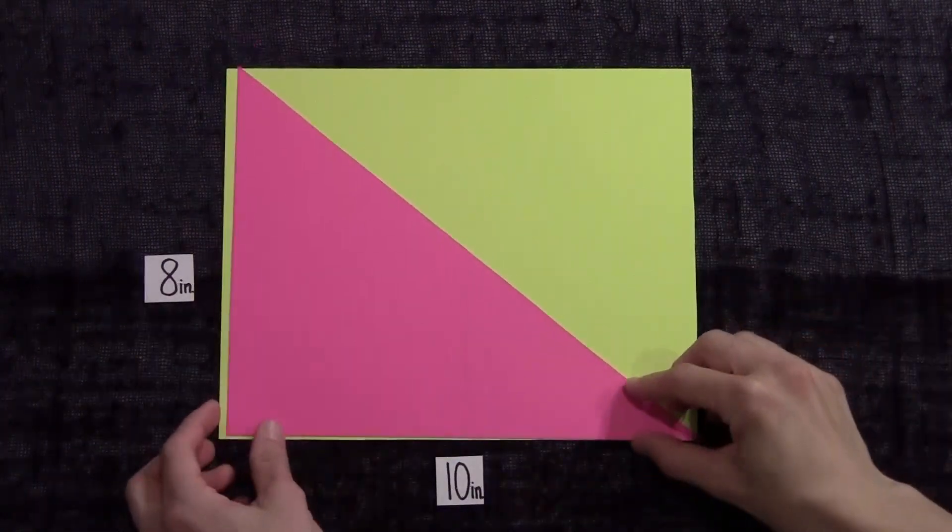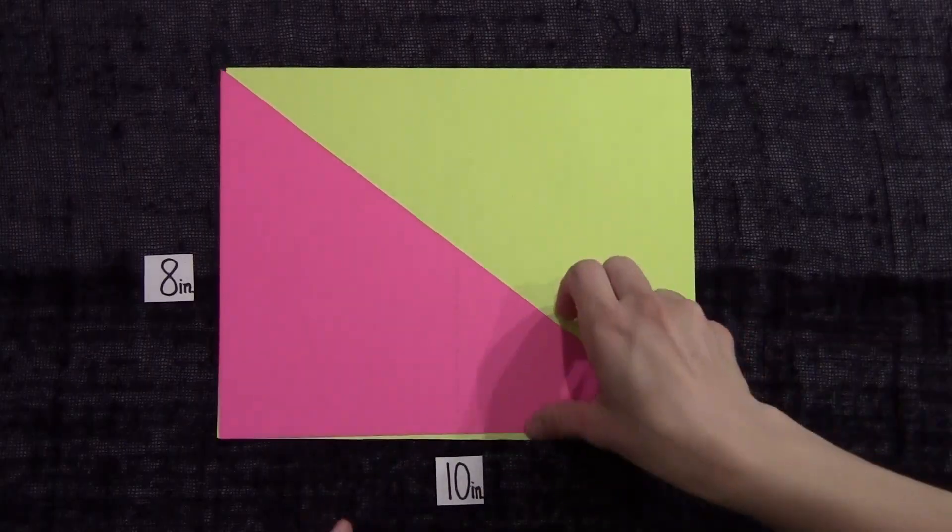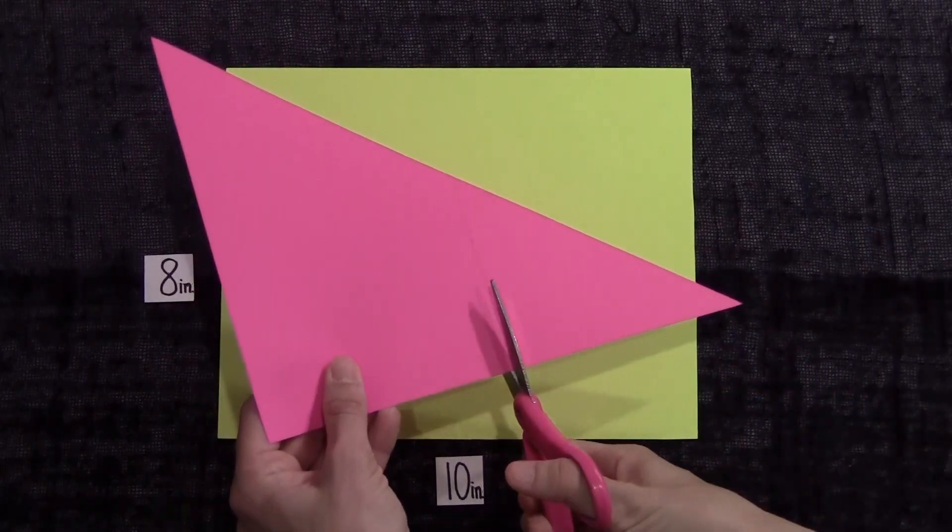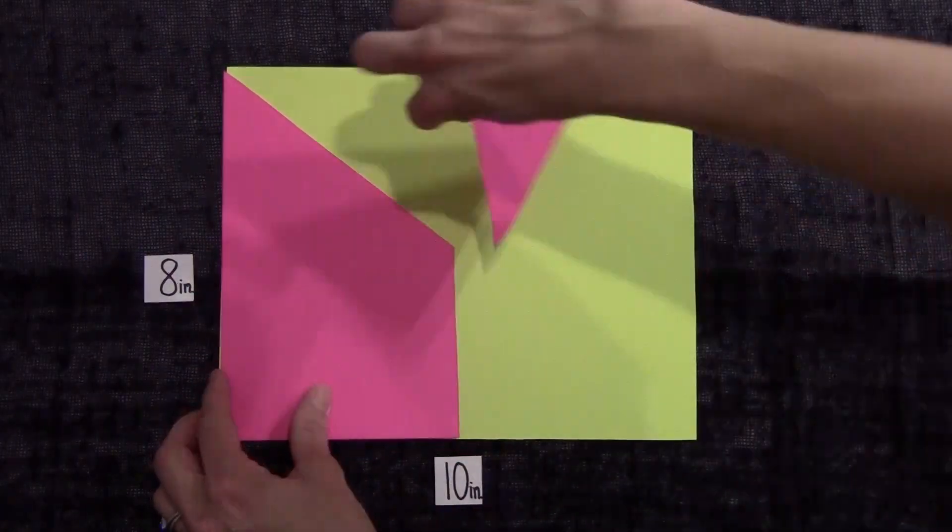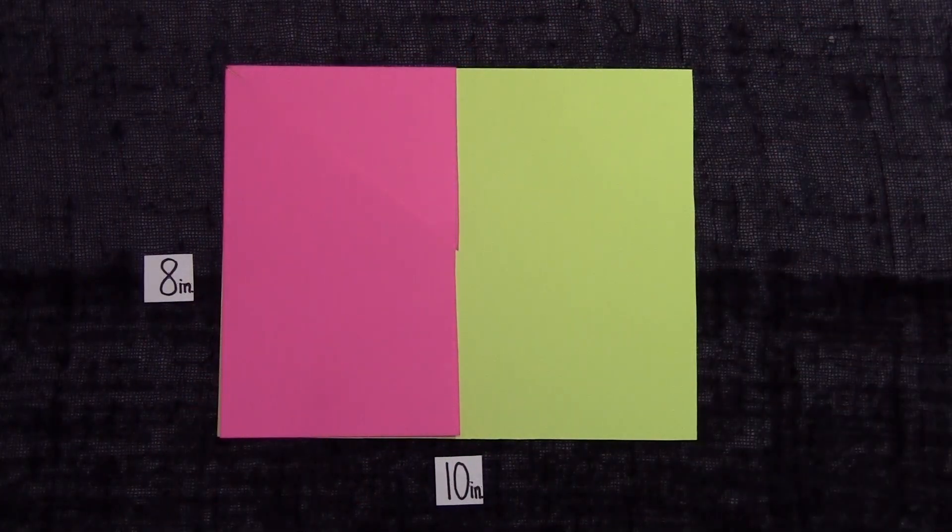As further proof, if half across this diagonal is difficult for you to see, look at it like this. If I decompose this triangle like this, you'll see that the triangle can fit into half of the rectangle in this way, too.